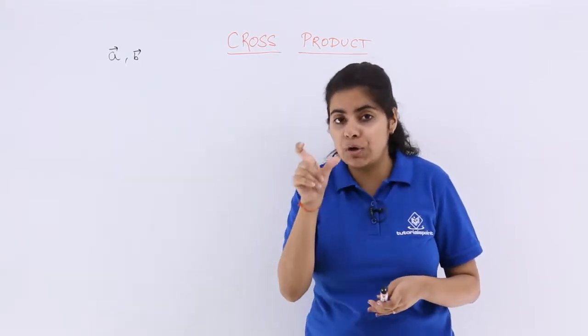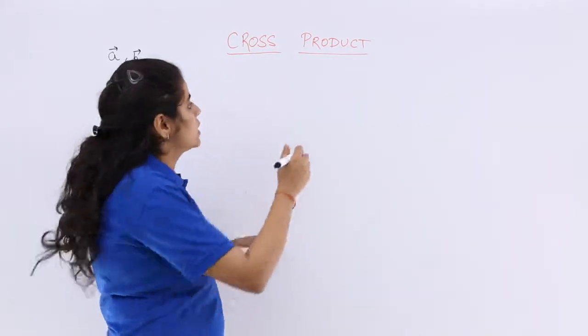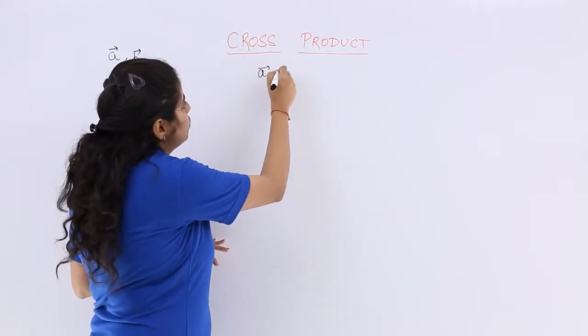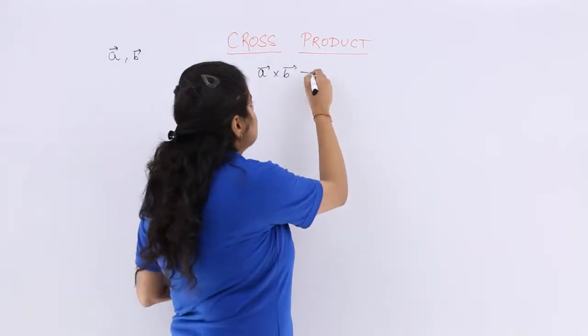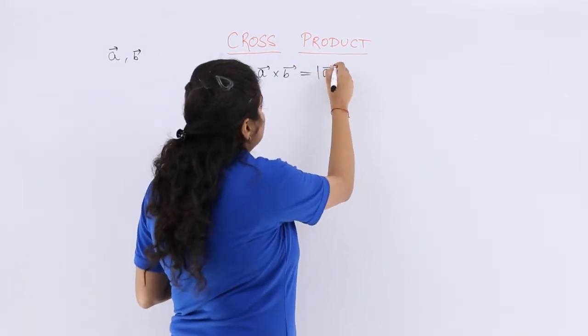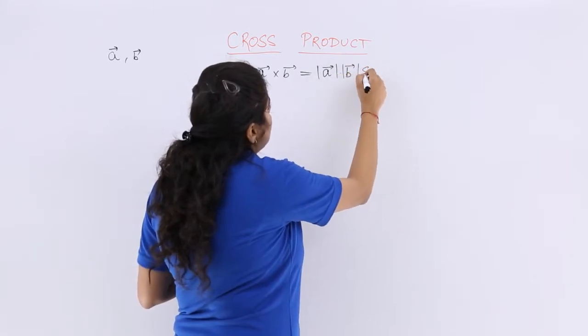But if I have to form a cross product, then it will be a cross b. So the cross product of these two vectors will be read as a cross b and that is equal to a vector, b vector, sine theta.